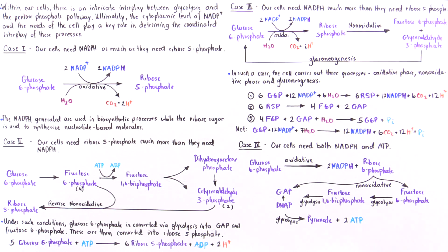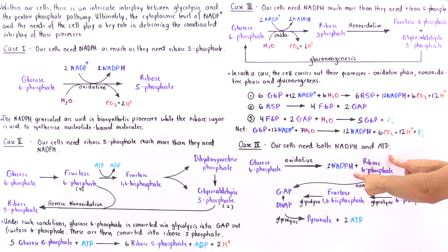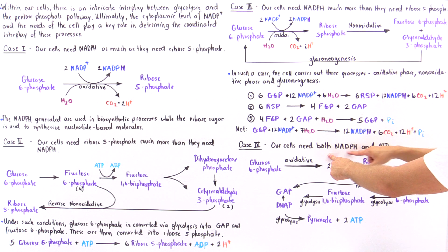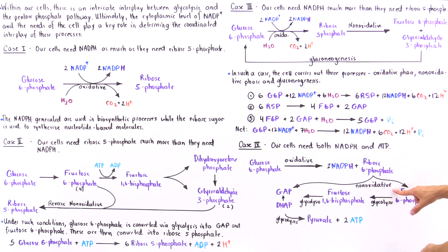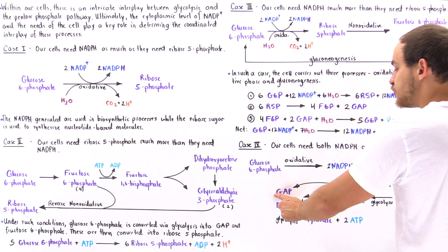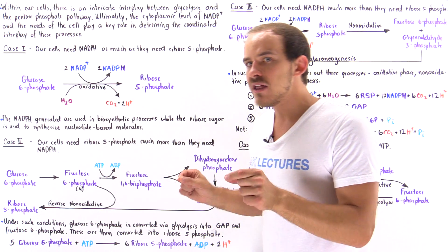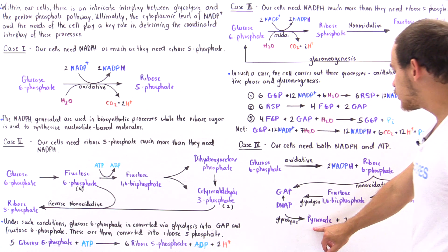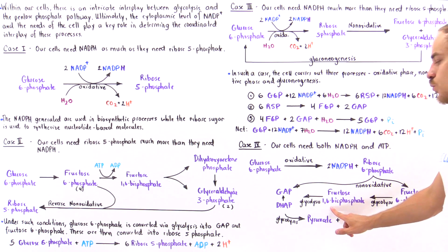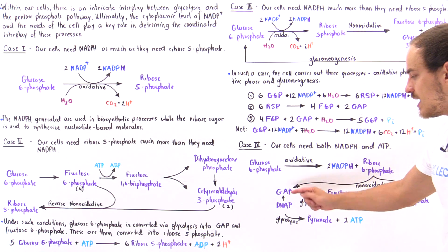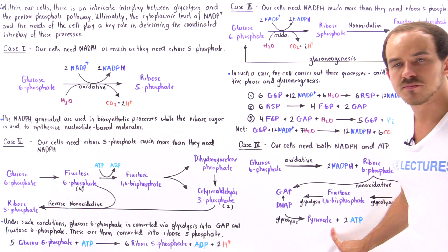Beginning again with glucose-6-phosphate, the oxidative phase of the pentose phosphate pathway takes place to form two NADPH molecules and ribose-5-phosphate, satisfying the NADPH requirement. The ribose-5-phosphate then undergoes the non-oxidative phase to generate glyceraldehyde-3-phosphate and fructose-6-phosphate. These intermediates enter the glycolytic pathway: fructose-6-phosphate proceeds to fructose-1,6-bisphosphate and then to pyruvate, while glyceraldehyde-3-phosphate also proceeds through glycolytic steps to form pyruvate and ATP molecules.